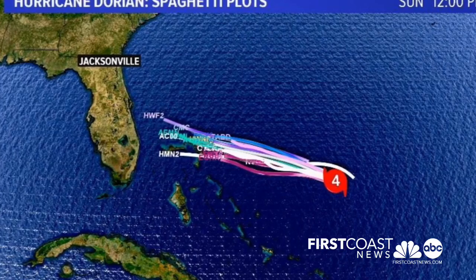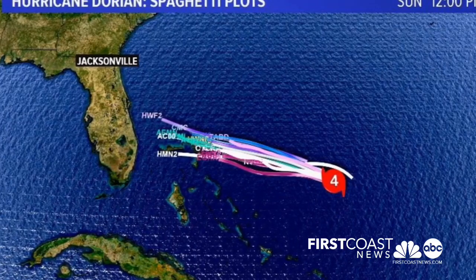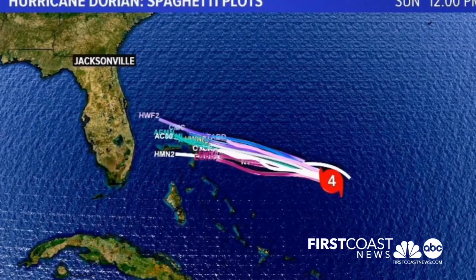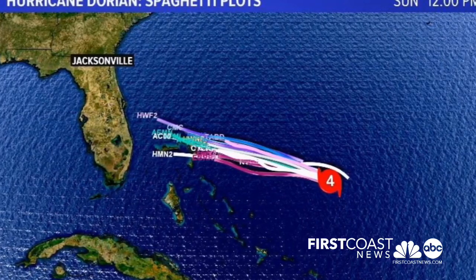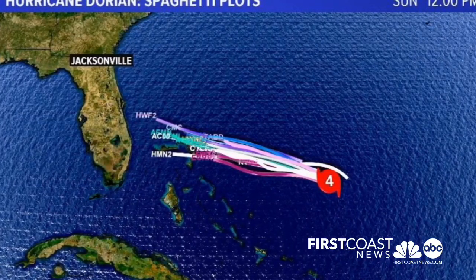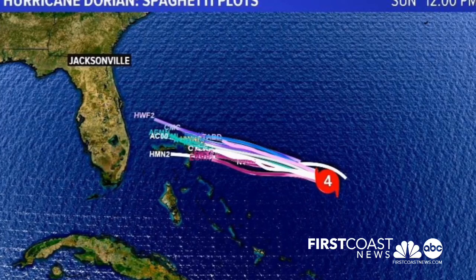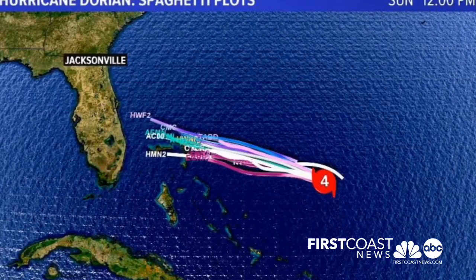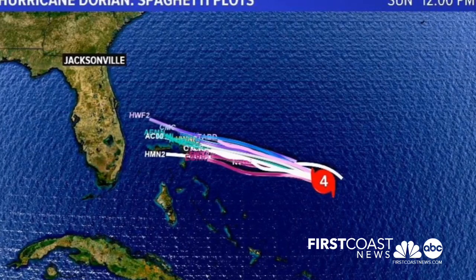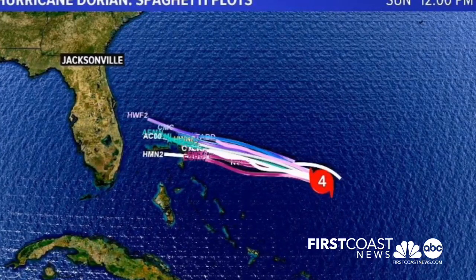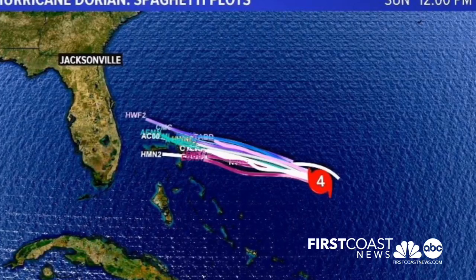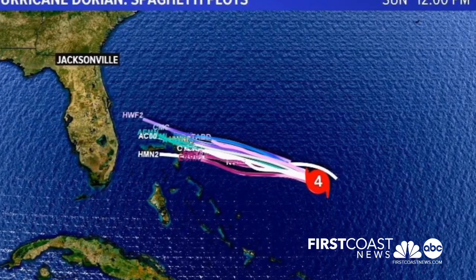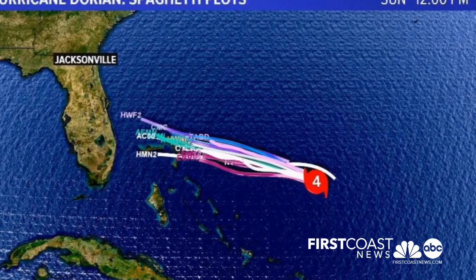They're doing billions of differential equations, spitting out an answer. As the storm is changing its current observation, its current conditions, the equation is always going to be changing. Therefore, the spaghetti models are always going to be fluctuating and changing a little bit. We know that no one particular model is perfect.